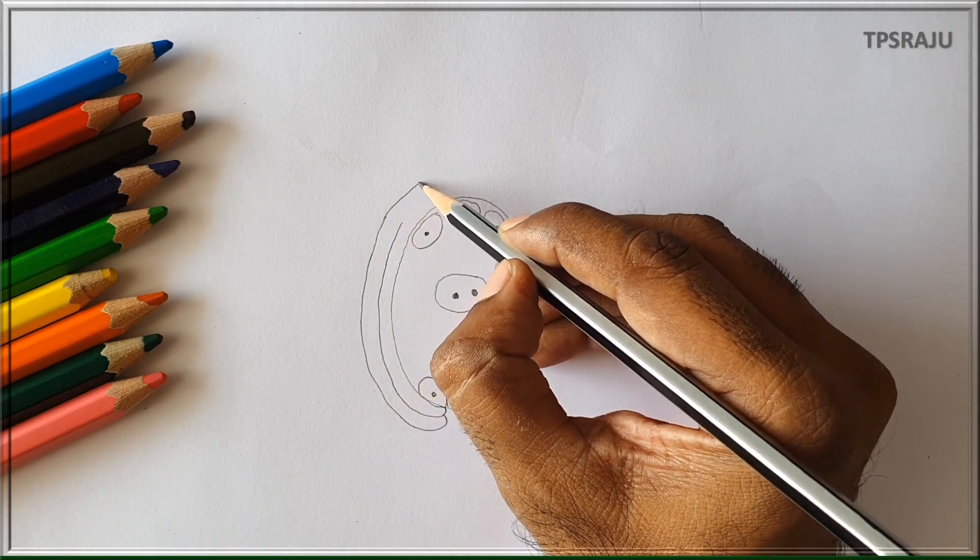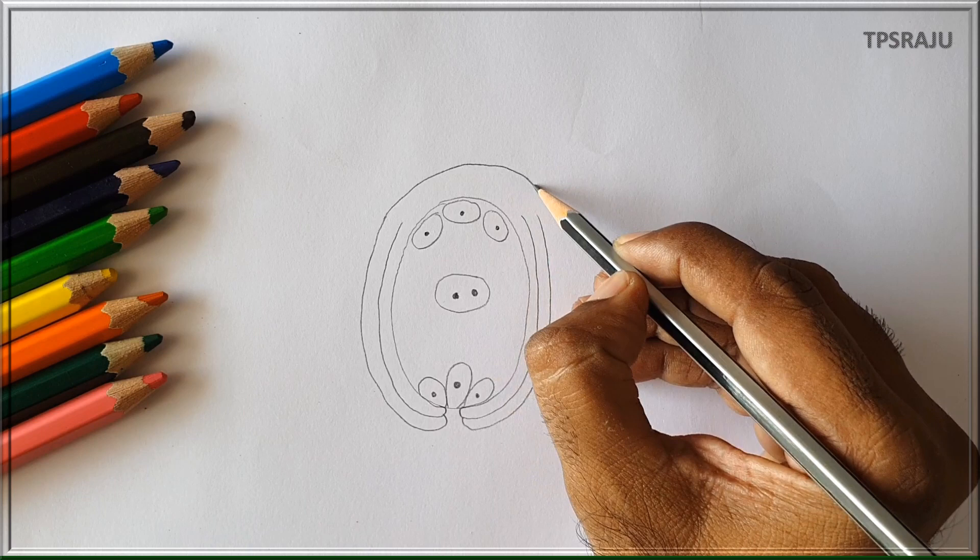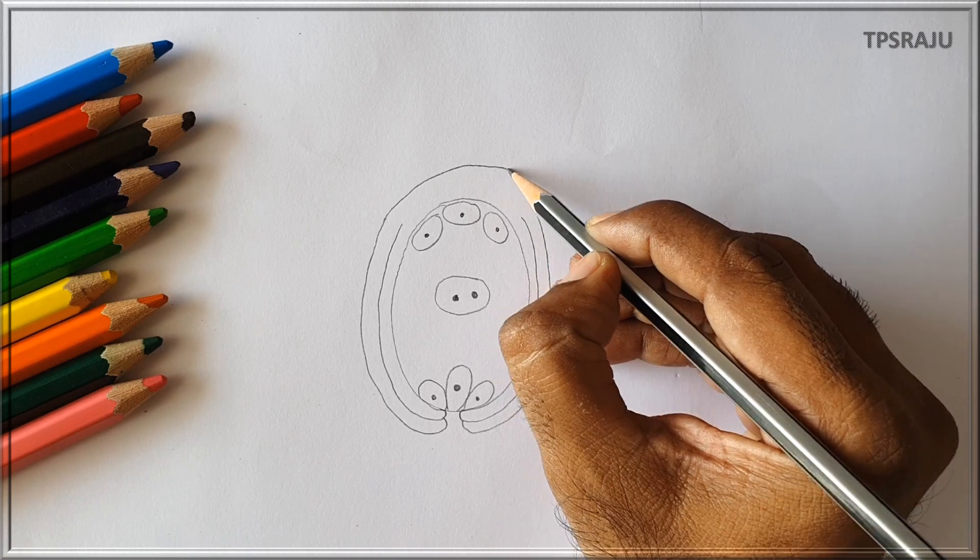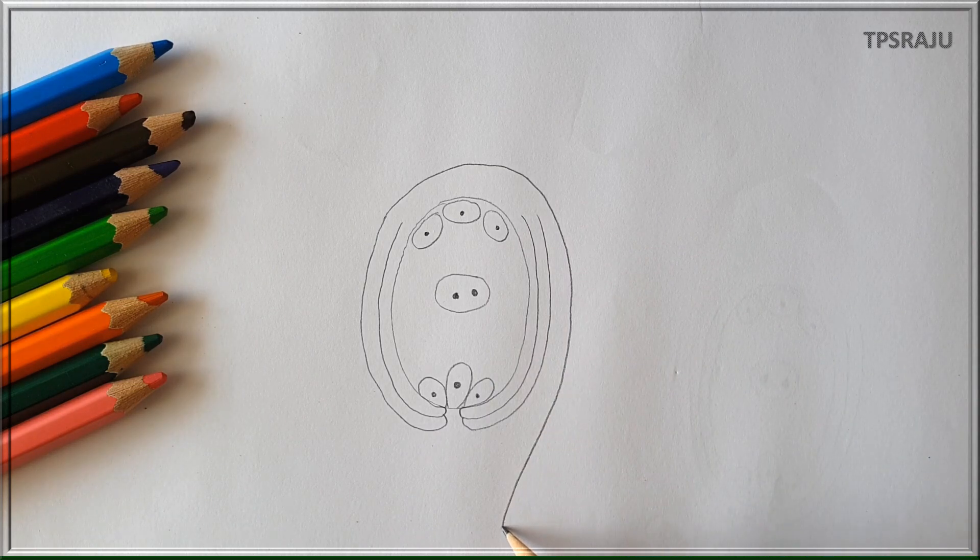These 2 integuments arise from the basal part of the ovule called the chalaza. The ovule has a small stalk-like structure called the funicle.